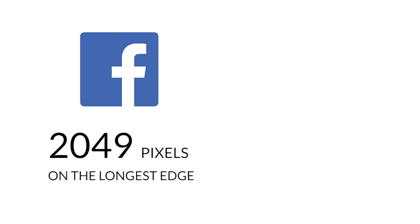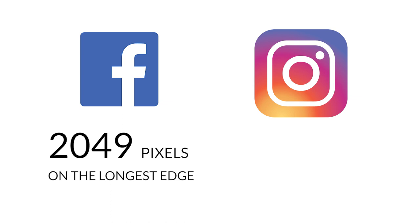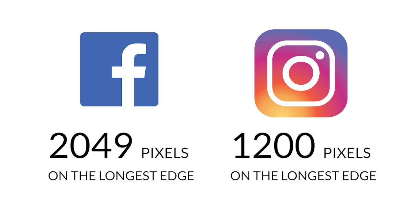So what about social media? Many photographers use Facebook, Instagram and other platforms to promote themselves, and they all have recommended pixel dimensions. For Facebook it's 2,049 pixels on the longest edge. On Instagram it's a paltry 1,200 pixels. But here's a little secret — I don't resize my images for these platforms and they look perfectly fine. I simply use the same 2,500 pixel wide images that I created for my website and upload these directly to Instagram or Facebook.